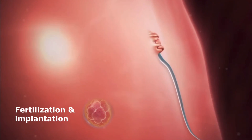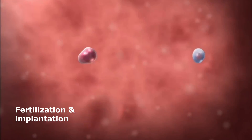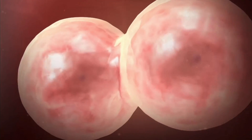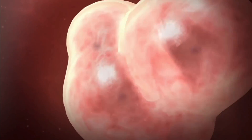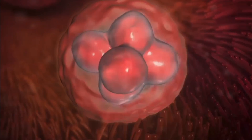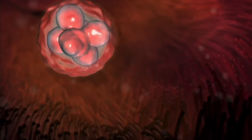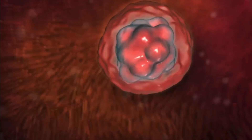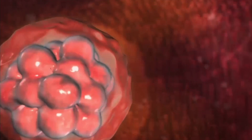Then we'll go to the fertilization to implantation animation, where you can watch as sperm fertilizes an egg in the uterine tube, and then a zygote forms and starts to divide as the cluster of cells moves towards the uterus to implant.